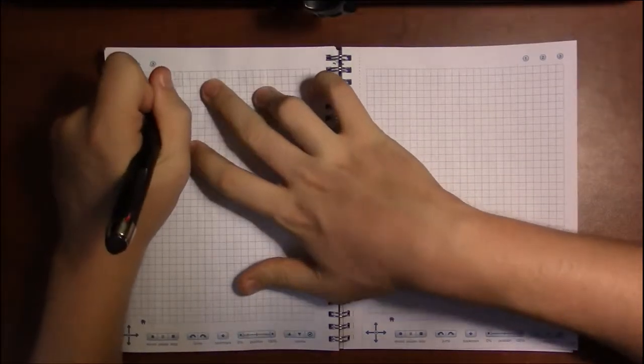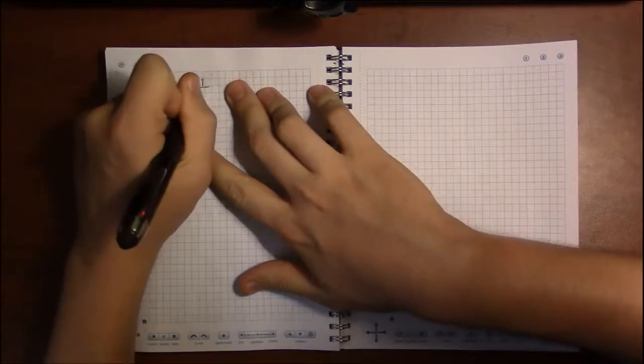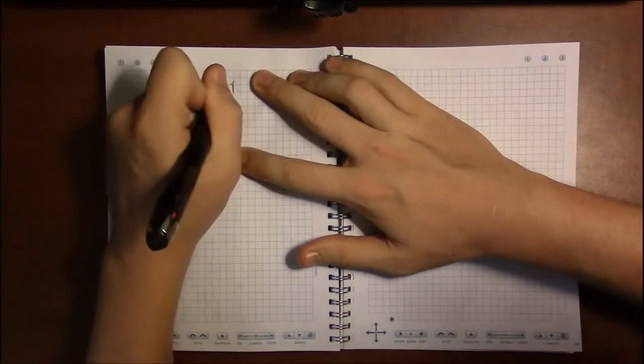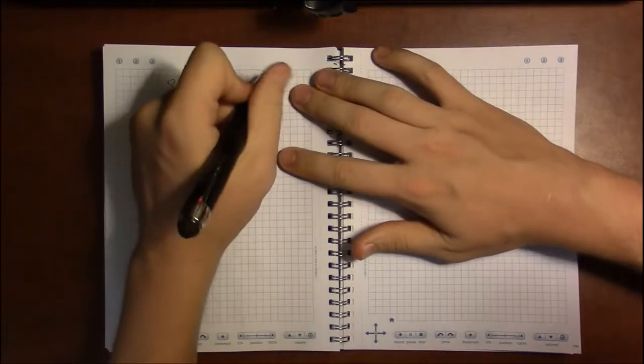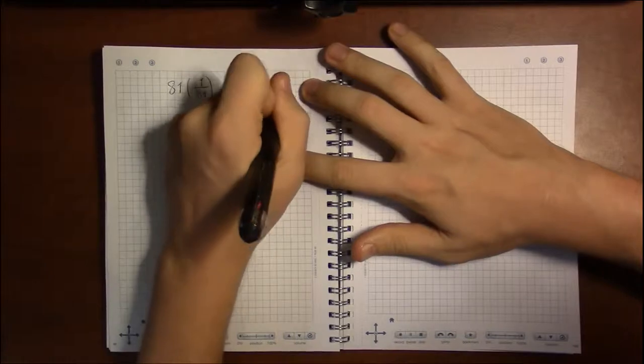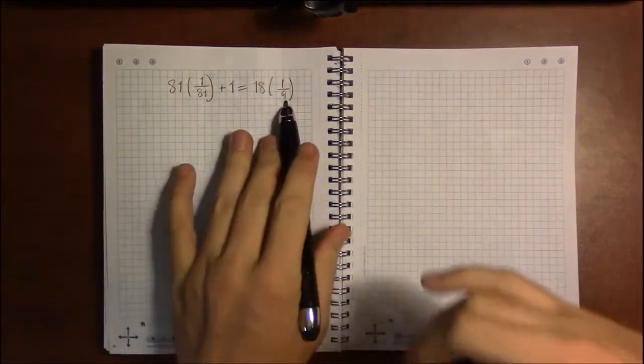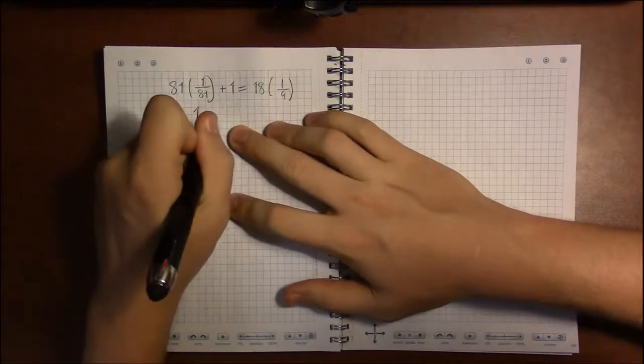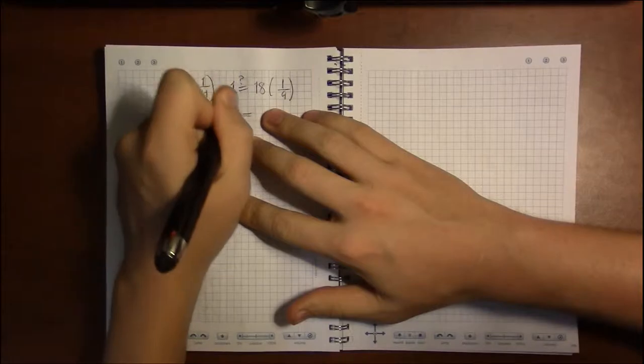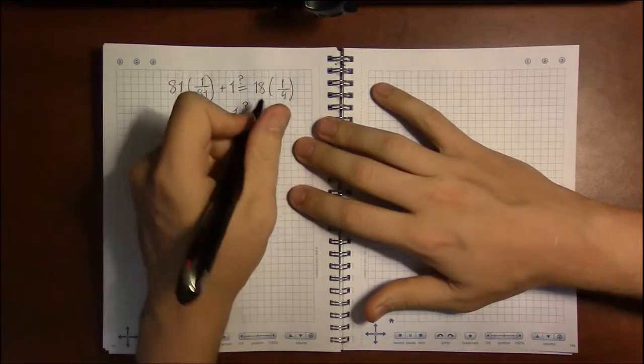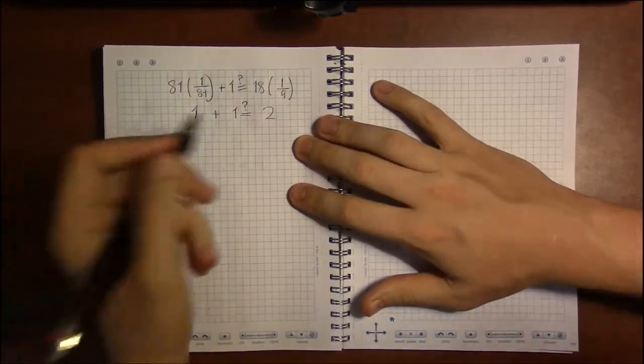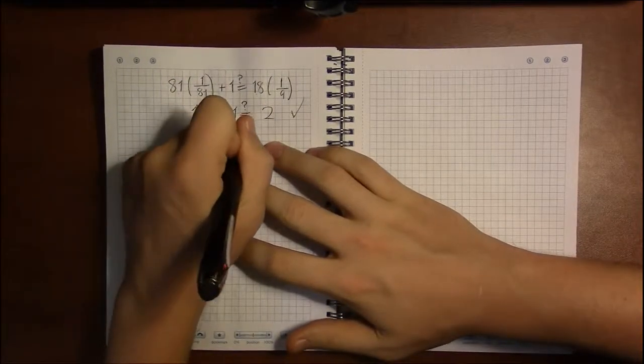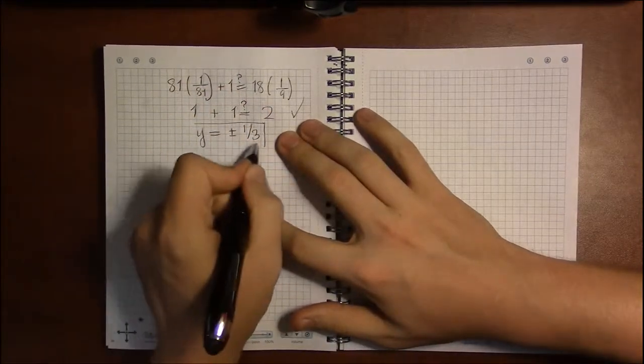So let's see. In either case, y to the fourth is 1 over 81. If we go back to the very original equation, then this is plus one equals 18 times y squared. And y squared, regardless of whether we chose plus or minus, is 1 ninth. So 81 times 1 over 81, that's just 1. So we get 1 plus 1 on the left. Is this the same thing? 18 times 1 ninth is just 2. And yeah, 1 plus 1 is 2. So both solutions work. And y can be either plus or minus 1 third and we'll end up with a correct answer.